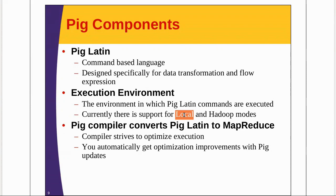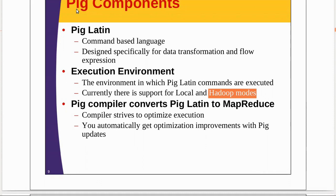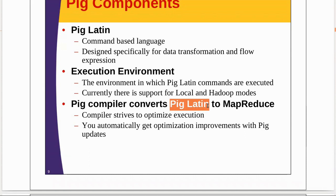In Hadoop mode, also called MapReduce mode, whatever query you write will be converted into a series of MapReduce jobs, and those MapReduce jobs are launched over the cluster. An extra advantage of PIG technology is that the PIG compiler converts your PIG Latin script into MapReduce jobs — it's not your part to convert them. Before converting to MapReduce jobs, the PIG Latin code you write will also be optimized by the PIG compiler.